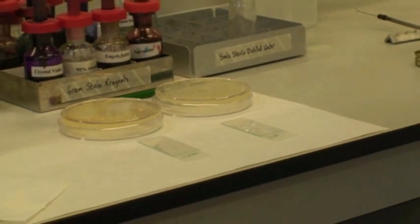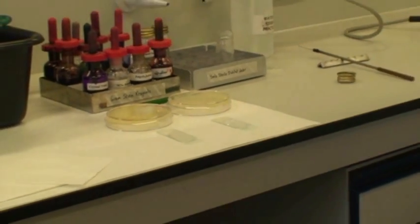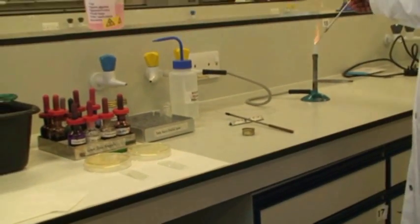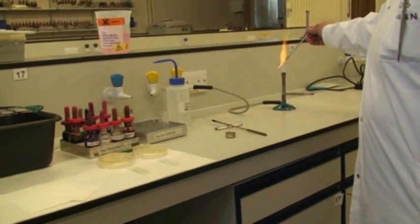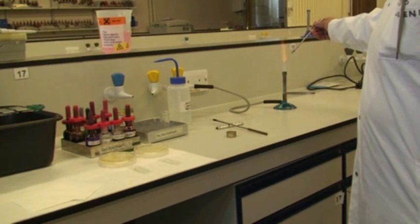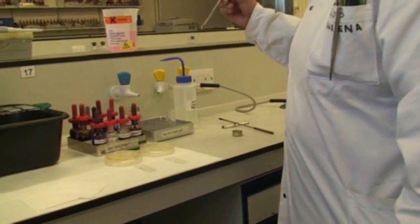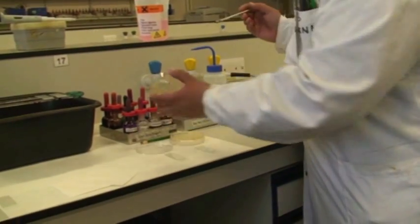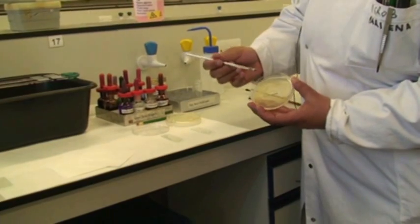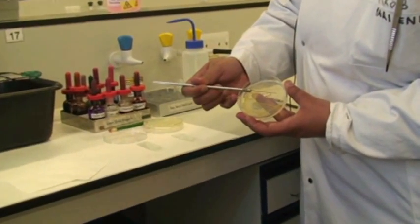Then using your straight wire this time, flaming it until it's red hot, and then wait until it's cooled a little bit to take one colony of your bacterial culture.